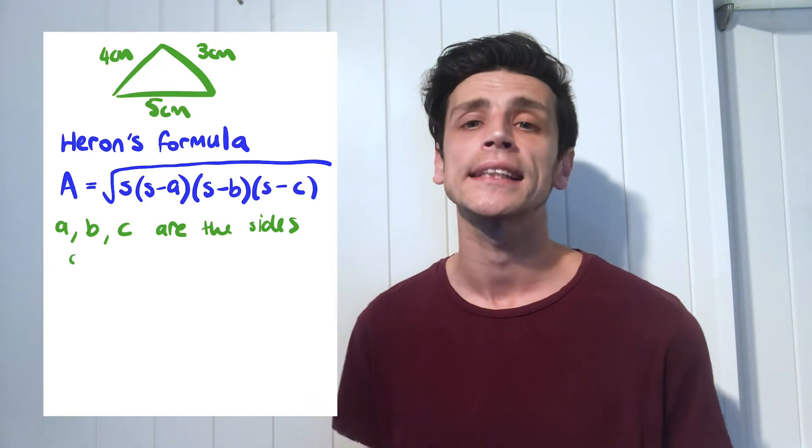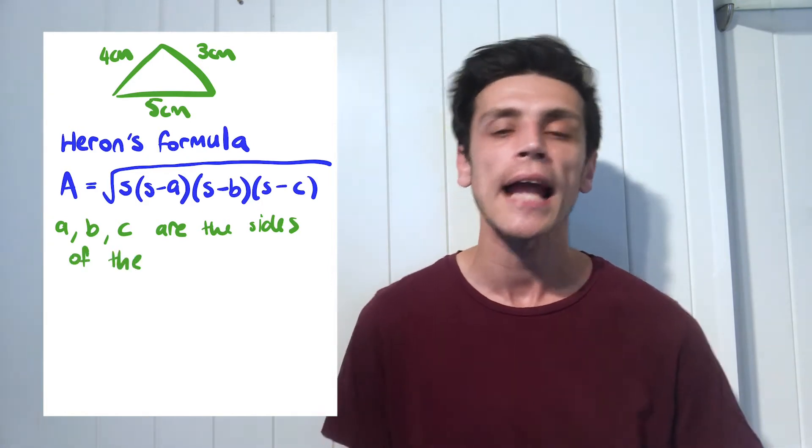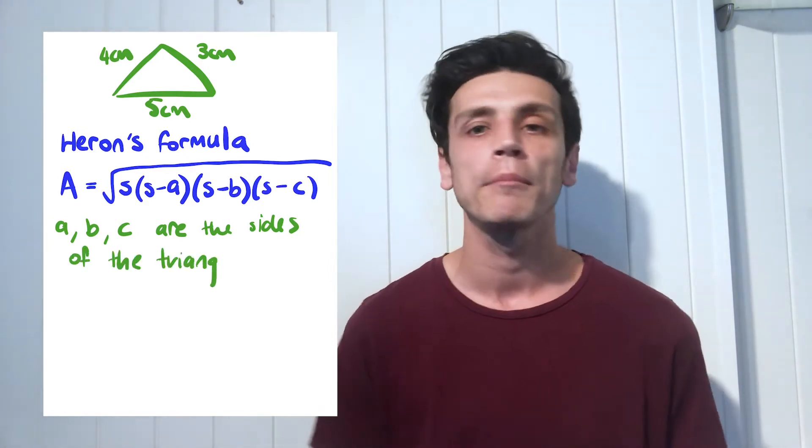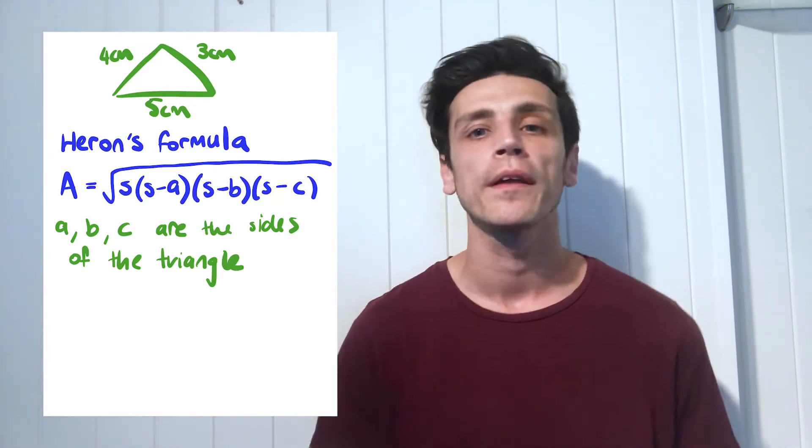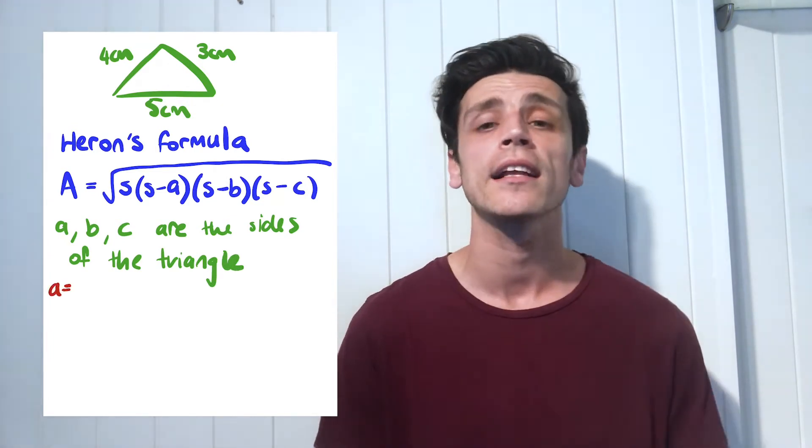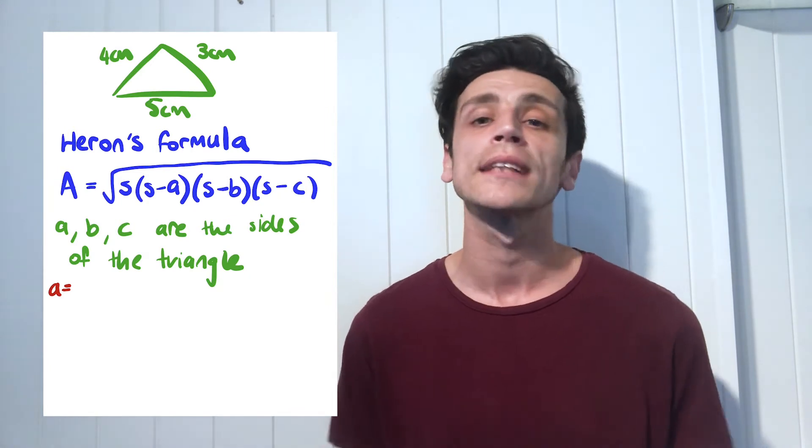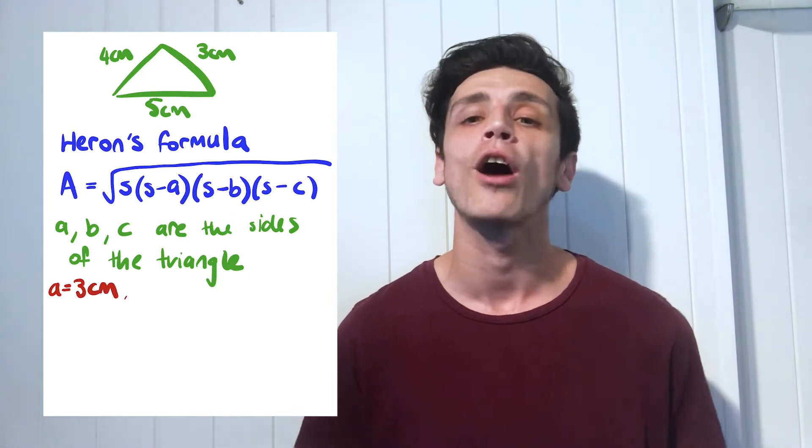Now that all seems quite complicated but we'll break it down so you can understand it further. So A, B and C are your sides and it doesn't matter which order you put them in. You can put them in ascending order, you can put them rotating clockwise or anticlockwise, it doesn't matter as long as one of the sides represents only one of the letters.